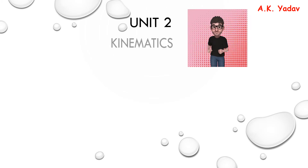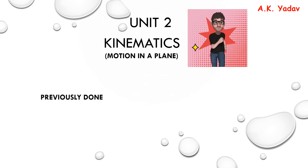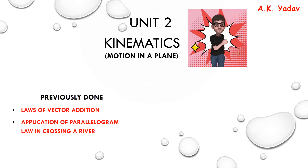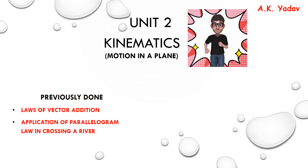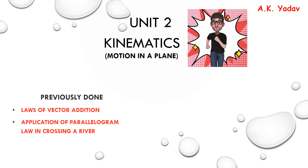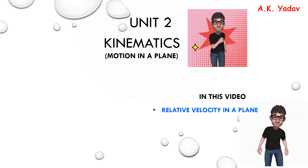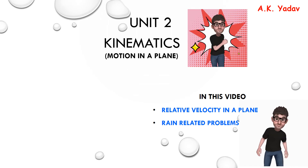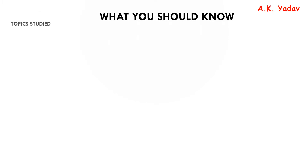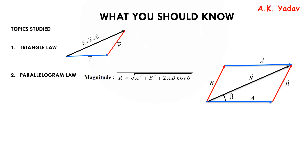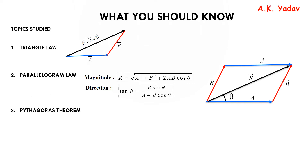Hello everyone, we are back with another video on kinematics — motion in a plane. What we have previously done: laws of vector addition and the application of parallelogram law in crossing-a-river questions. Now in this video we are doing relative velocity in a plane and rain-related problems. What you should know: triangle law, parallelogram law — with magnitude R = √(a² + b² + 2ab cosθ), direction tan β = b sinθ / (a + b cosθ), and the Pythagoras theorem.